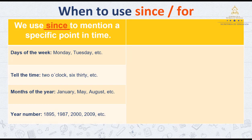This chart is going to help us understand when to use 'since' and when to use 'for'. On the left, we find the explanation that says we use 'since' to mention a specific point in time. Examples include days of the week, telling the time such as 2 o'clock or 6:30, the month of the year such as January, February, March, and the year number such as 1895, 1987, 2000, or 2009.